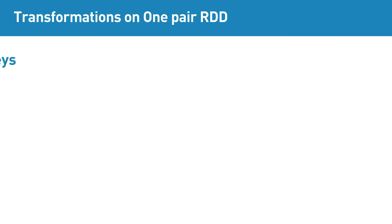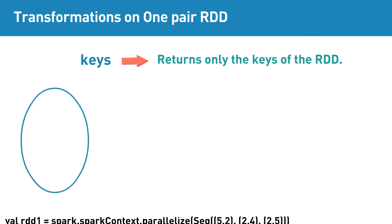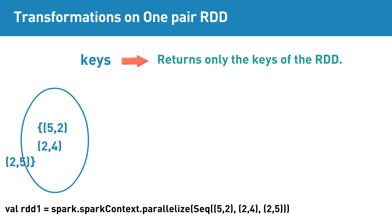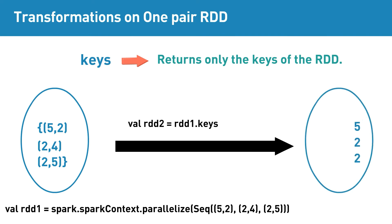keys is a pair RDD transformation that returns only the keys of the RDD. For example, if the input RDD contains elements (5,2), (2,4), (2,5), then applying the keys transformation will return 5 and 2, which are the keys in the RDD.